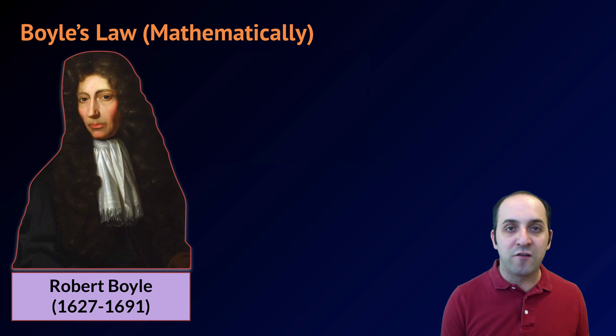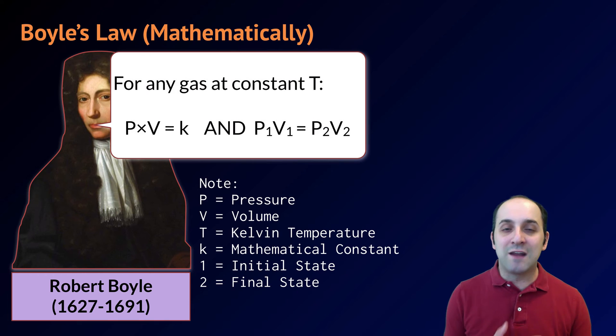Mathematically, Boyle's law is expressed as following. For any gas at constant temperature, the pressure times the volume of the gas is equal to a constant value. This means that the initial pressure times the initial volume, or P1 times V1, has to equal the final pressure times the final volume, or P2 times V2.